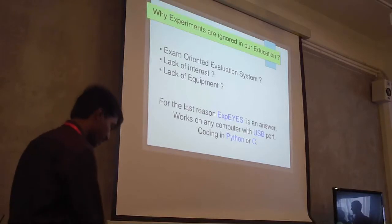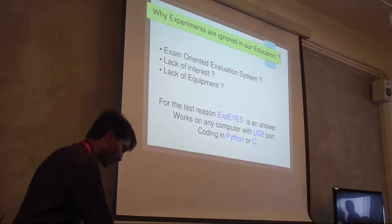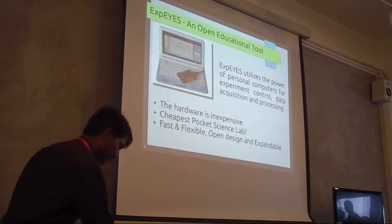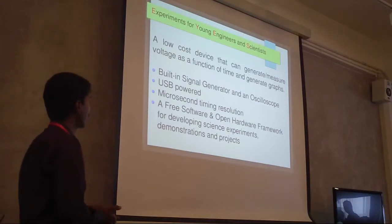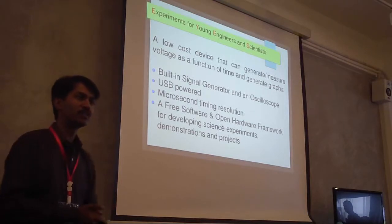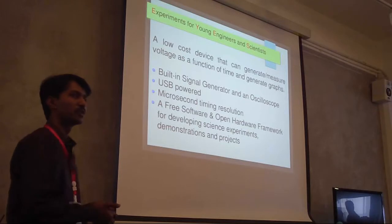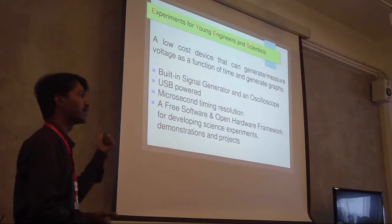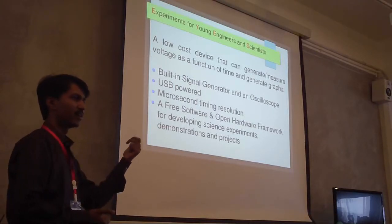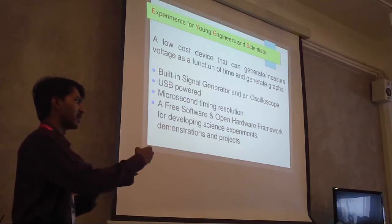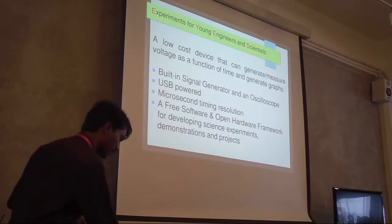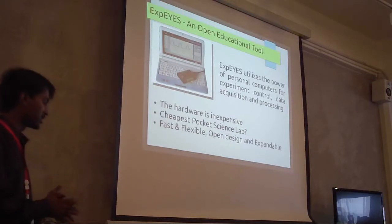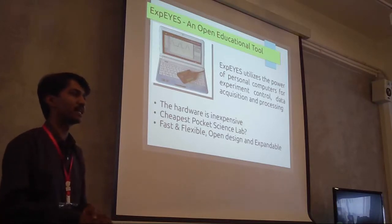X-PIES works with a five-volt source or it can work with the USB port of a computer. It is a low cost device that can generate and measure voltage. There is a built-in signal generator and a ready-made digital storage oscilloscope. The most important feature of this interface is the microsecond time resolution - you can measure any two events separated by four microseconds, which gives us the power to fetch data and do real experiments.